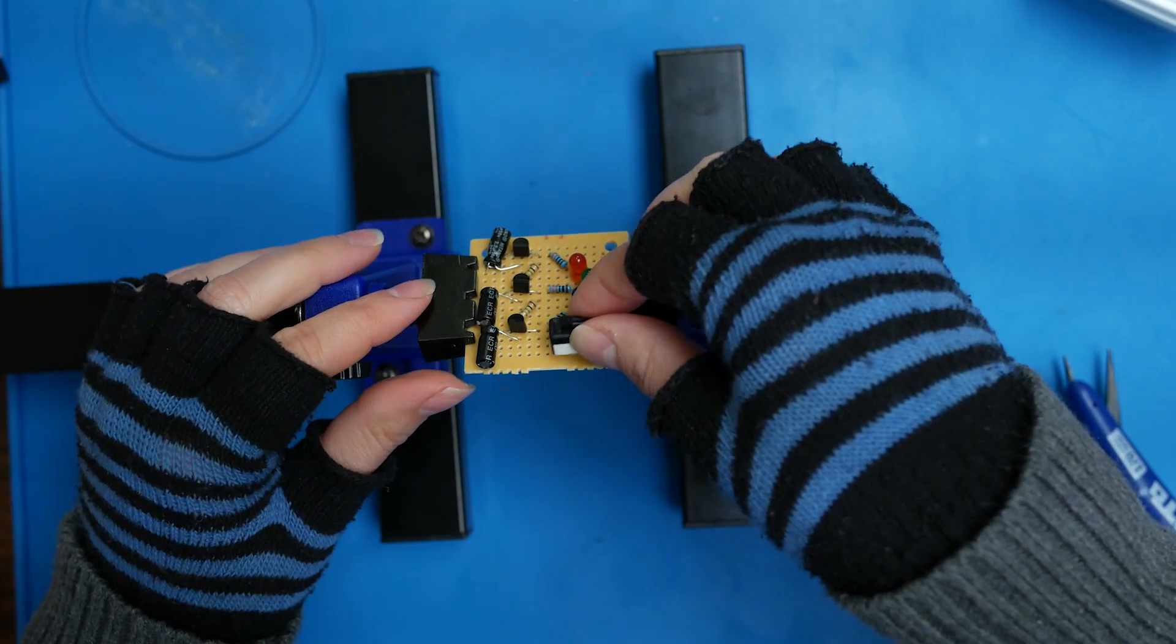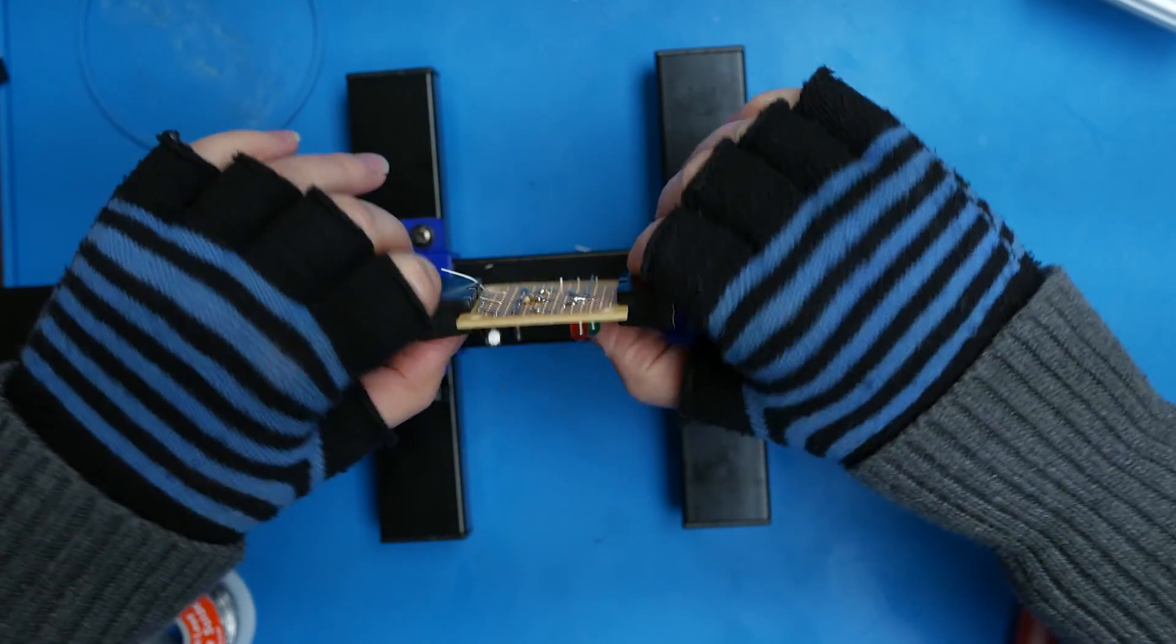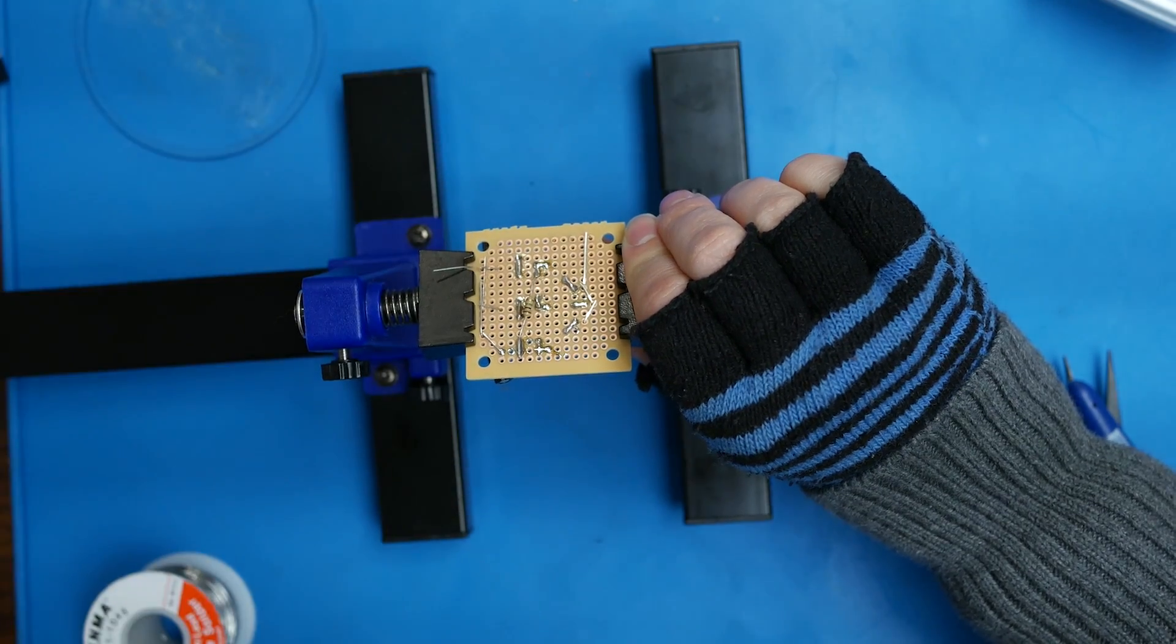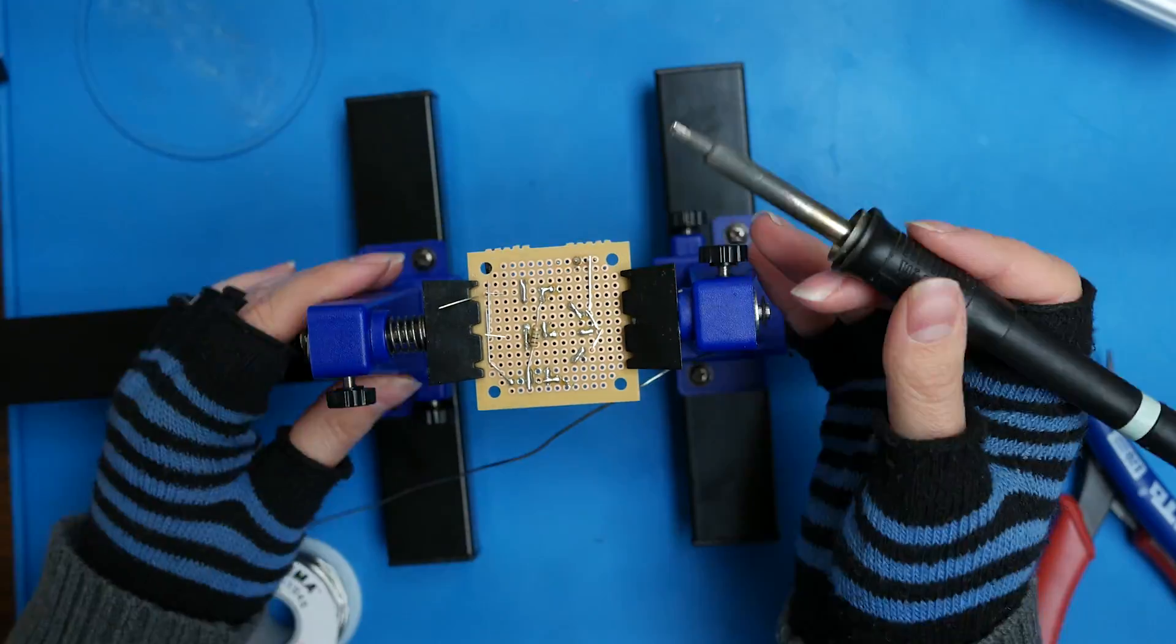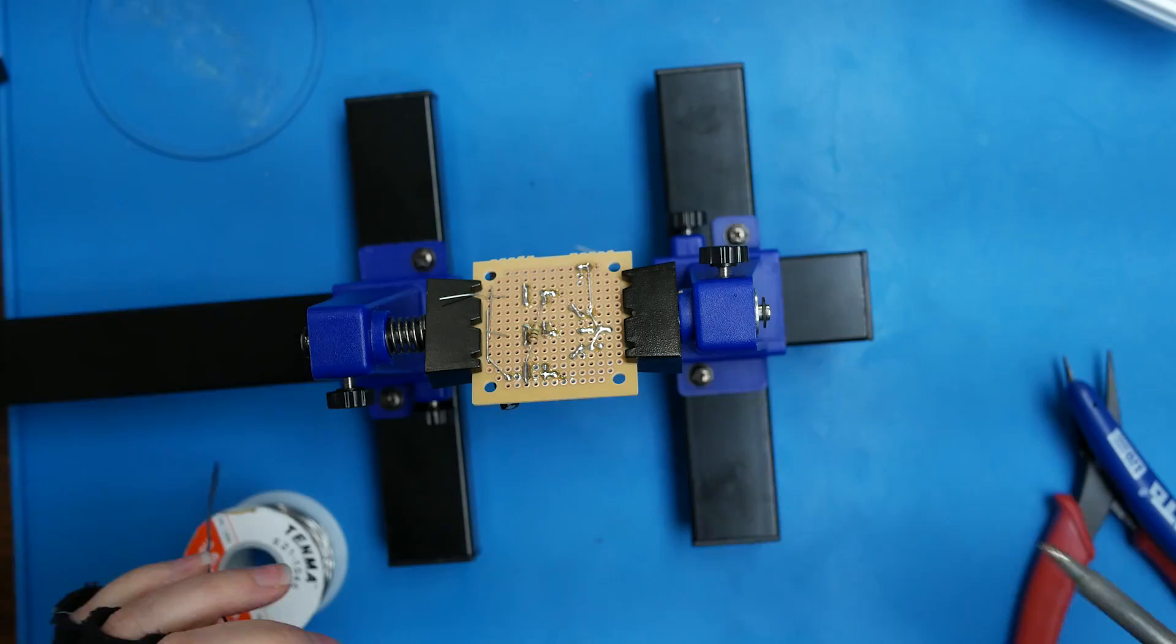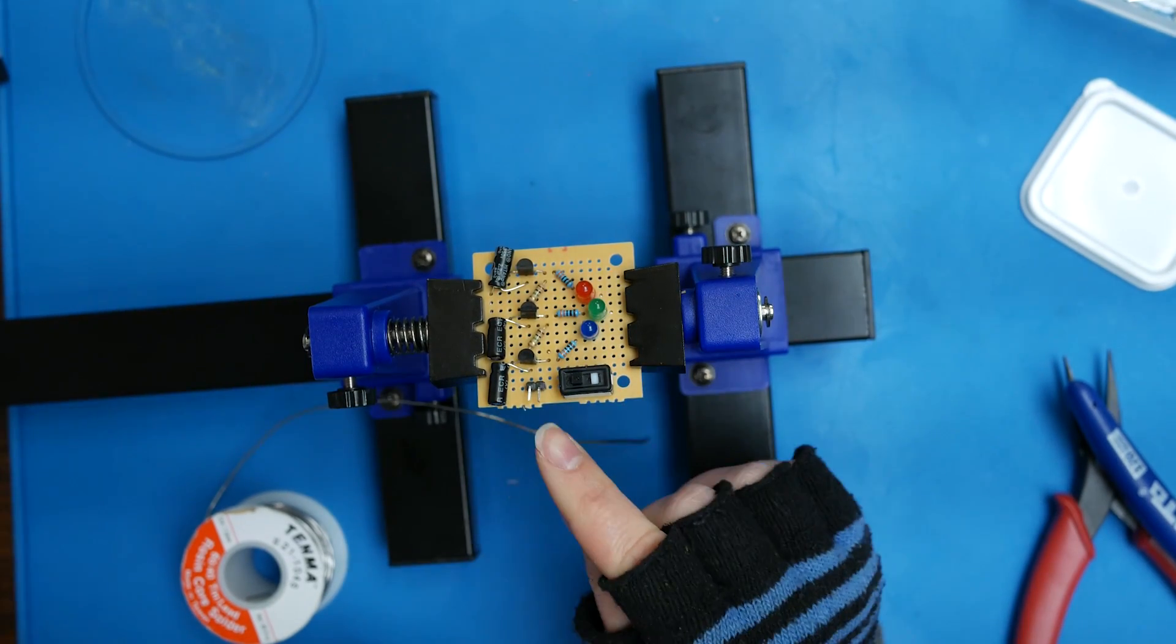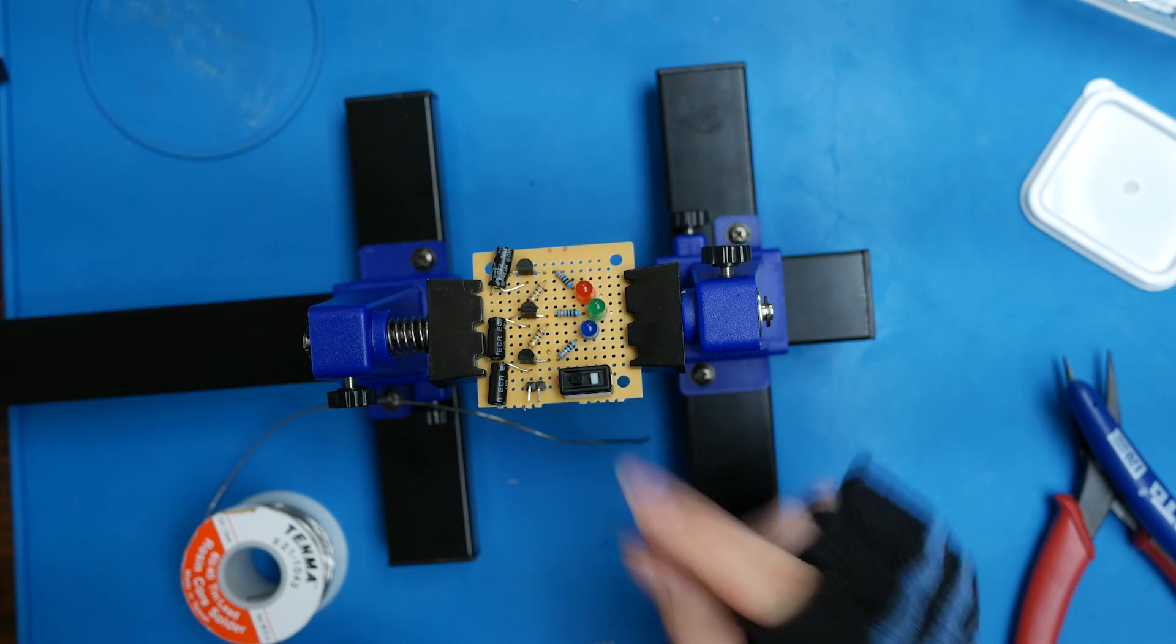Next, we'll add our switch and connect all of the positive pins of the LEDs to the switch. Next, we'll add the pin that will go to our battery pack, and we'll connect one of the pins to the switch.